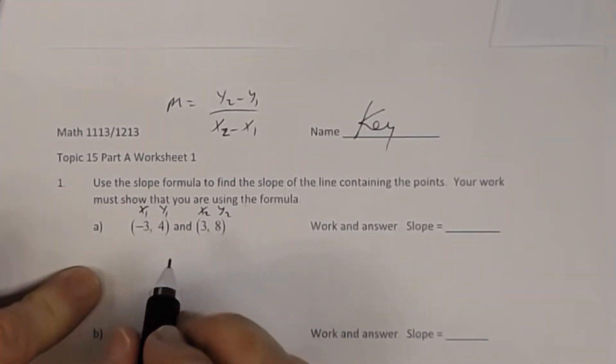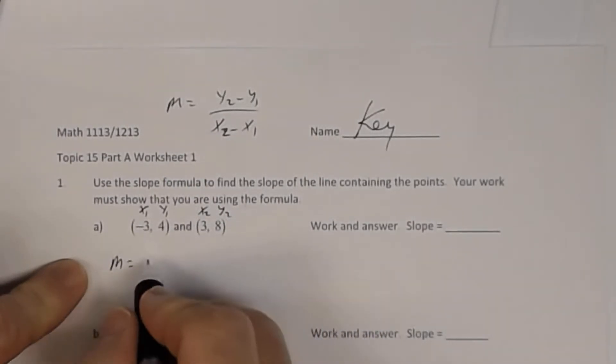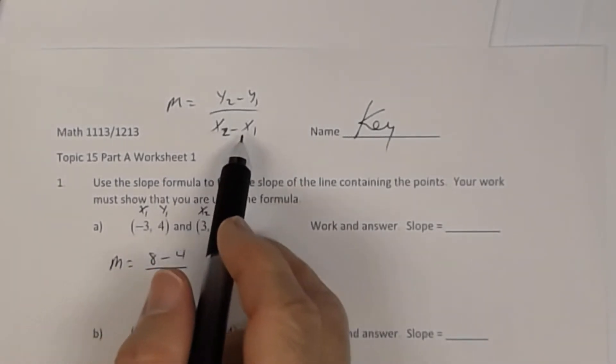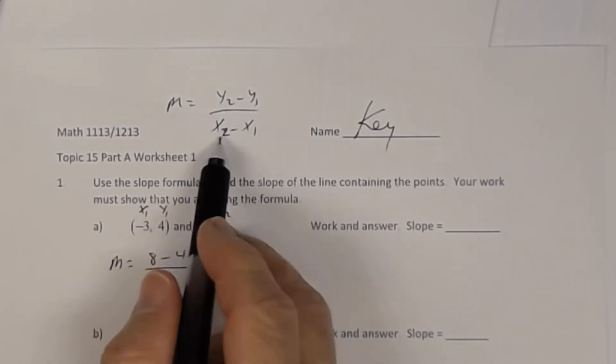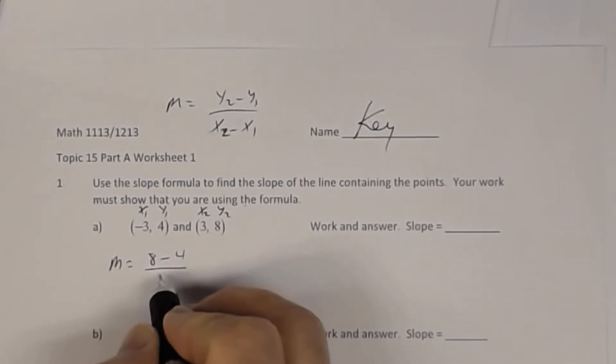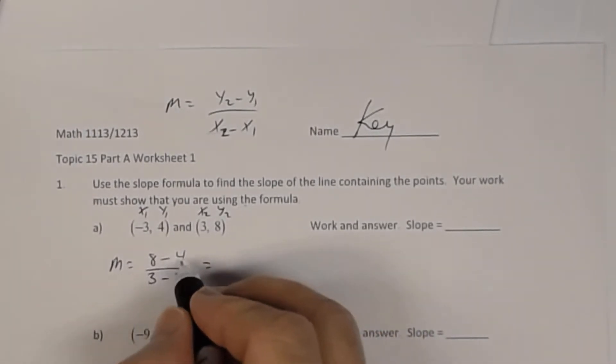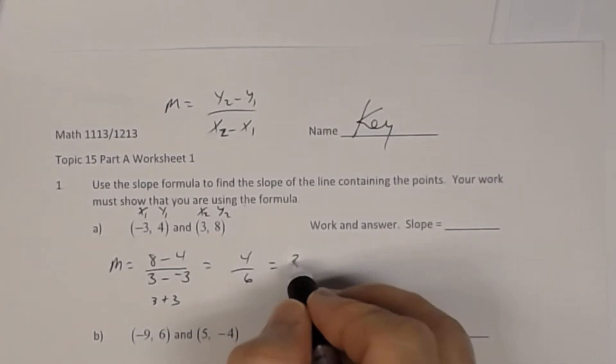So the work that I need to see is: slope equals y2, which is 8, subtract y1, which is 4, divided by—since I started with the second y coordinate—3 subtract negative 3. Simplifying this: 8 subtract 4 is 4, 3 subtract negative 3 means 3 plus 3, which is 6. Reducing, you get 2/3.